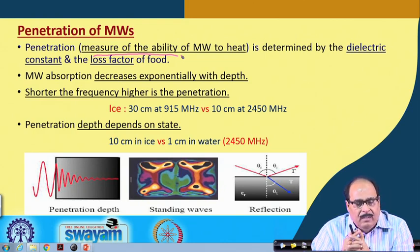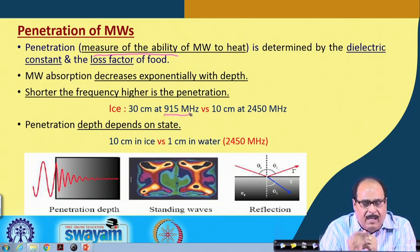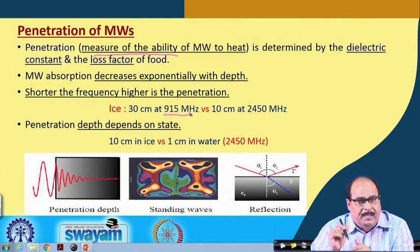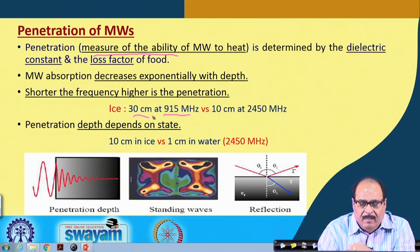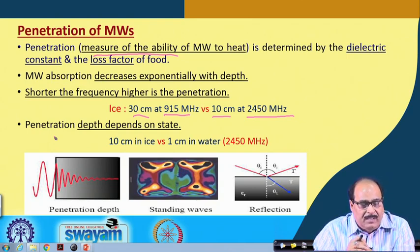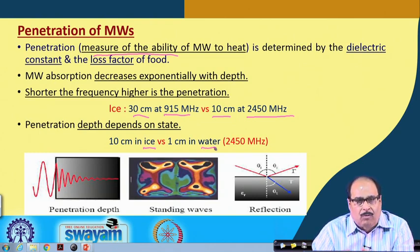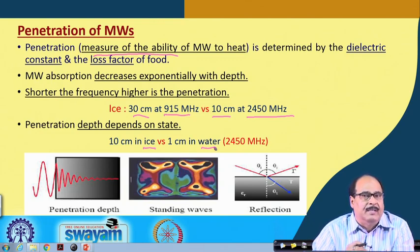Microwave absorption decreases exponentially with depth; shorter the frequency, higher the penetration. For example, at 915 megahertz the microwave can penetrate 30 centimeters deep into ice, whereas at 2450 megahertz it can penetrate only 10 centimeters deep. Also, penetration depth depends on the state of the matter: at 2450 megahertz, it can penetrate 10 centimeters in ice but only 1 centimeter in water.